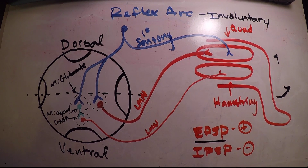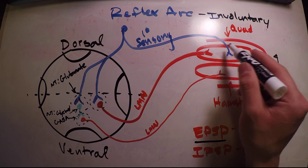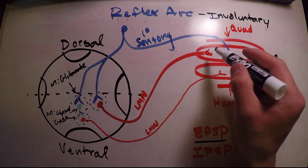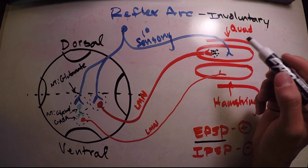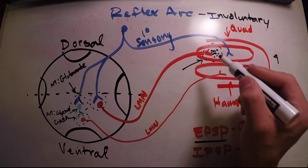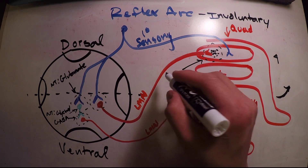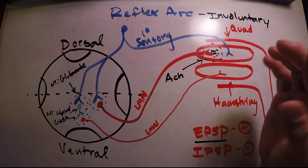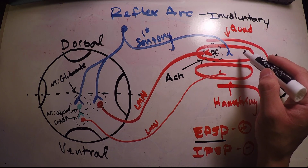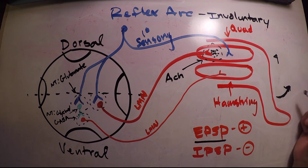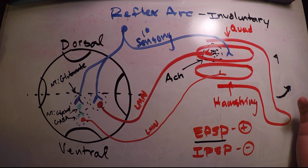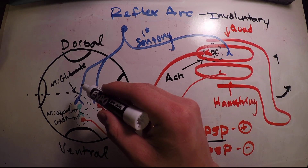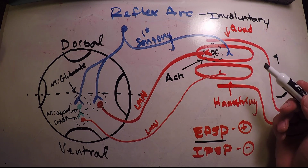That is how our reflex arc works. The last step is to contract our quadricep. To do so, we release neurotransmitters into our muscles — specifically acetylcholine, abbreviated ACH. By releasing acetylcholine, it generates an action potential in our quadricep muscle, which tells it to contract, and that's how we kick up our leg. The reflex arc is extremely important because it's an involuntary motion — we don't have to think about what we're doing. It enters into the spinal cord, not the brainstem, and comes right back out into our peripheral nervous system.